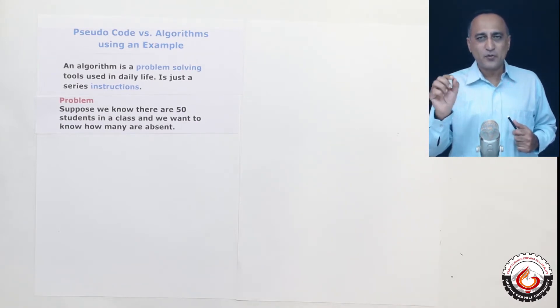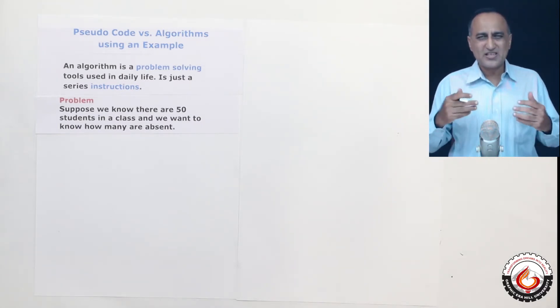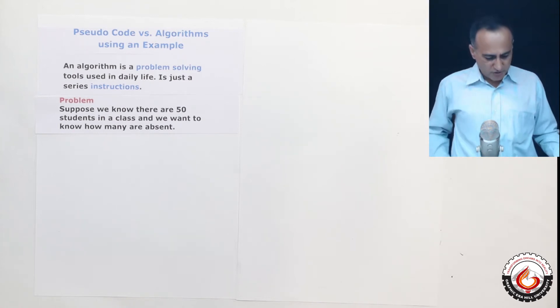Then what I do is if I have to calculate the absent, I will say absent is calculated as difference of total minus present that should give you the number of students who are absent. So this I'm taking a normal day to day problem and trying to show you how the pseudocode approach is used.